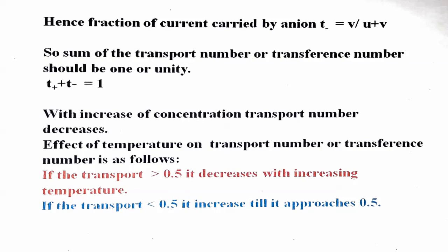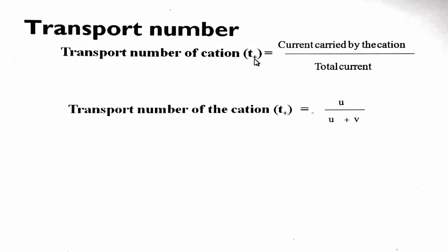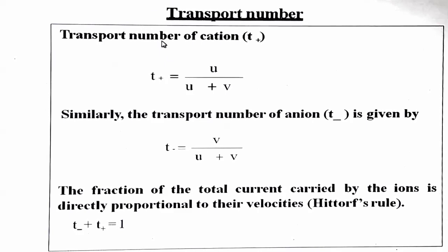To summarize: the transport number of cation, T-plus, equals current carried by cation upon total current, shown as U upon U plus V, where U is the fraction of total current carried by the cation. Similarly, the transport number of anion, T-minus, equals current carried by anion upon total current. There are two methods for the determination of transport number.